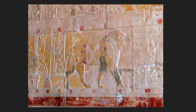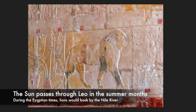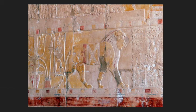So how did the lion come to be? One ancient Egyptian legend states that lions came to the Nile River during the summer months to cool off, and the summer is when the sun passes through Leo. Another theory states that because the sun is passing through Leo during the summer months, it was associated with the most powerful beast at that time, which was the lion.